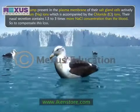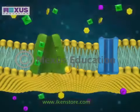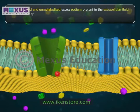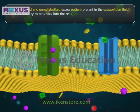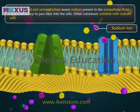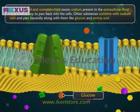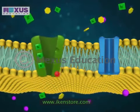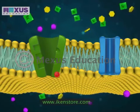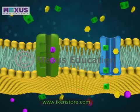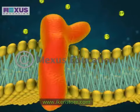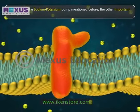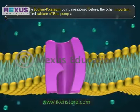To compensate for this salt loss, marine animals drink sea water. Unsecreted and unmetabolized excess sodium in extracellular fluid tends to pass back into the cells. Other substances combine with sodium ions and pass inwardly along with them, such as glucose and amino acids in the intestine. This phenomenon of combining a substance with sodium ions is called secondary active transport, whereas the sodium-potassium exchange pump is called primary active transport. Apart from the sodium-potassium pump, other important pumps include the calcium ATPase pump and the proton pump.